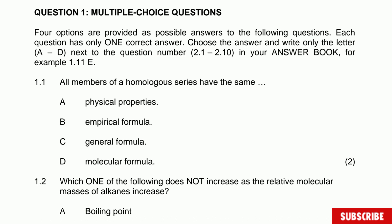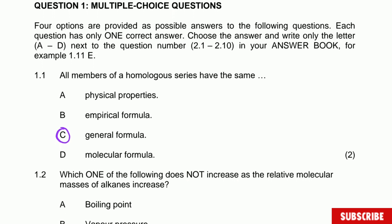Question 1.1 says all members of a homologous series have the same — and they give options: physical properties, empirical formula, general formula, or molecular formula. Homologous series cannot have the same physical properties for all members, because physical properties depend on different factors. The answer is the general formula — all members of one homologous series follow the same general formula, which is the definition of a homologous series.